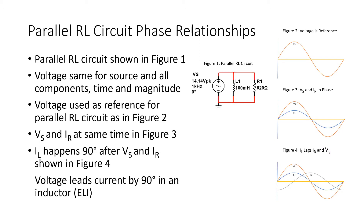Figure 1 shows us a parallel RL circuit. The circuit has a source voltage of 14.14 volts peak at a frequency of one kilohertz, connected to the parallel combination of L1 100 millihenries and R1 620 ohms. In a parallel circuit, the voltage is the same for all components — V source equals VL1 which equals VR1, both in magnitude and in time. So in this parallel circuit we use voltage as our reference, shown in Figure 2, where the sinusoidal waveform for V source starts at 0 degrees as our reference element.